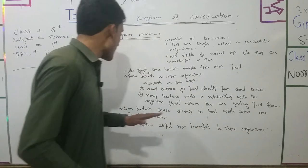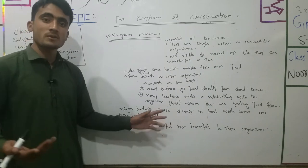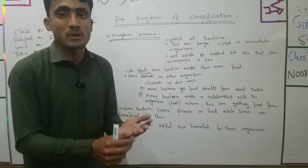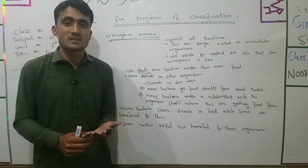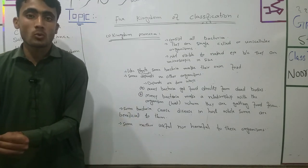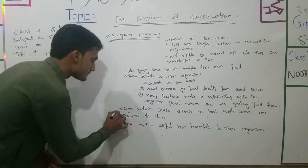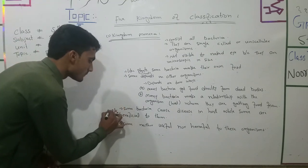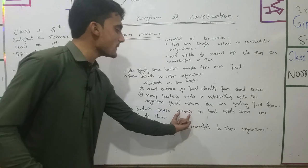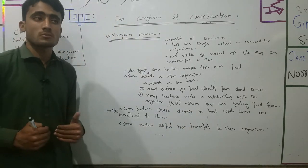While some bacteria are beneficial, others are harmful. For example, nitrogen-fixing bacteria in the roots of plants are beneficial — 'beneficial' means 'phydomand' or useful. Some bacteria cause diseases, for example, certain bacteria cause stomach diseases.